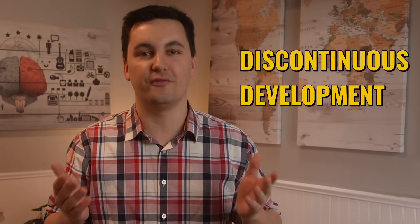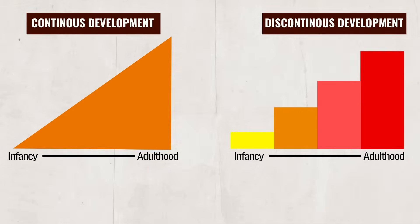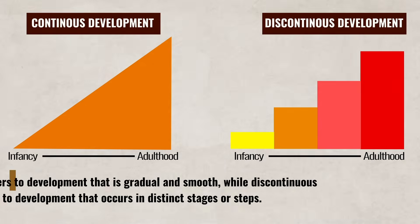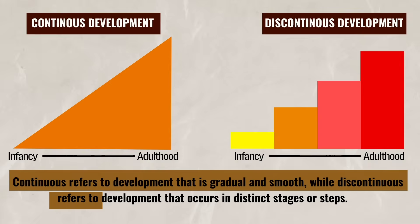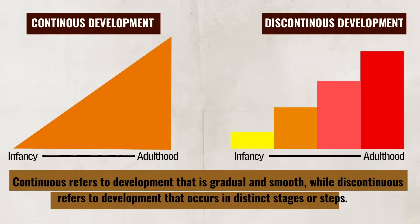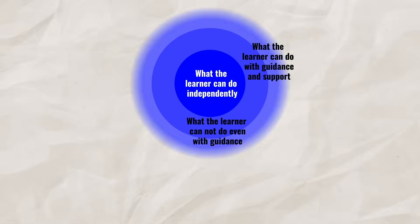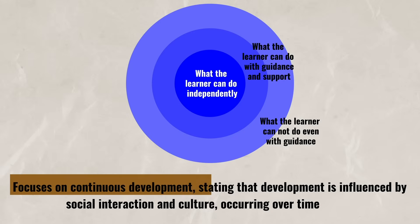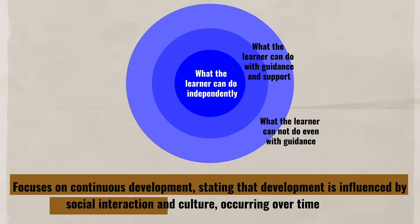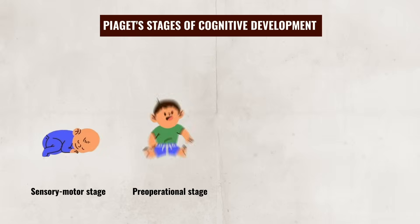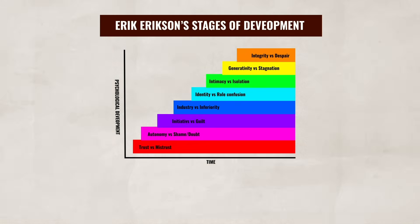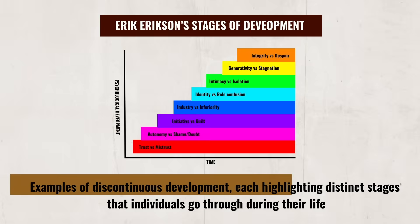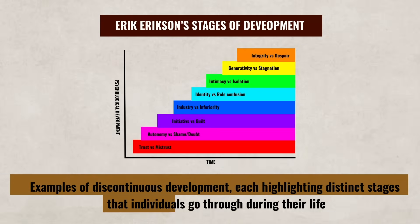The last theme that informs developmental psychology is continuous versus discontinuous development. This theme explores how smooth or gradual the developmental process is. Continuous refers to development that is gradual and smooth, while discontinuous refers to development that occurs in distinct stages or steps. Later in this unit, we'll look at Vygotsky's sociocultural theory, which focuses on continuous development, stating that development is influenced by social interactions and culture occurring over time. We will also look at Piaget's cognitive development theory and Erik Erikson's stages of development, which are examples of discontinuous development, each highlighting distinct stages that an individual will go through during their life.